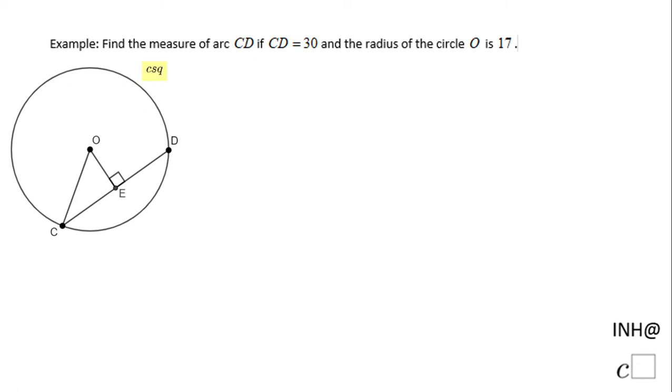Welcome back to C square. In this example we have a circle and we need to find the measure of arc CD, which is this arc right here. We know the chord CD is 30 and the radius of circle O is 17. This segment OC is the radius, which is 17. The question is how am I going to use this information to find the measure of arc CD?